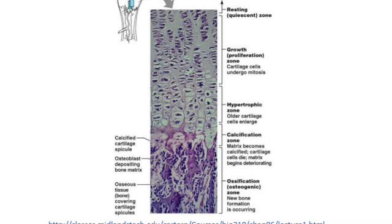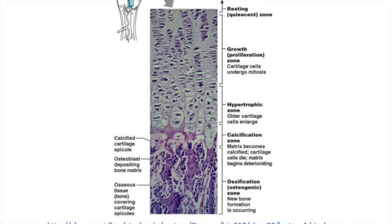Since the epiphyseal plate contains mostly cartilage, it's pretty weak — it's the weakest part of the long bone — and so a lot of fractures occur in this area. On the next slide, we're going to go over the five different types of epiphyseal plate injuries.